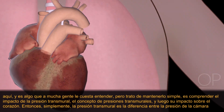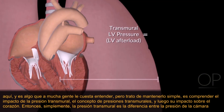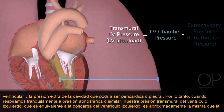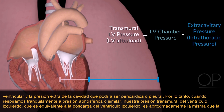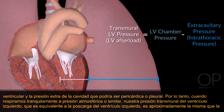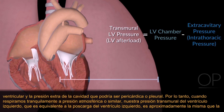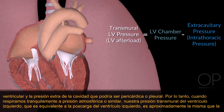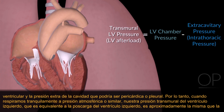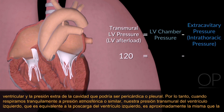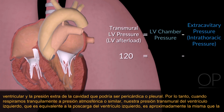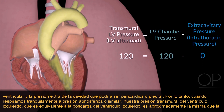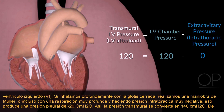Simply put, a transmural pressure is the difference between ventricular chamber pressure and the extra-cavitary pressure, which could be pericardial or pleural. When we breathe quietly at atmospheric pressure, our transmural left ventricular pressure — which is equivalent to the afterload that the left ventricle sees — is about the same as LV pressure.